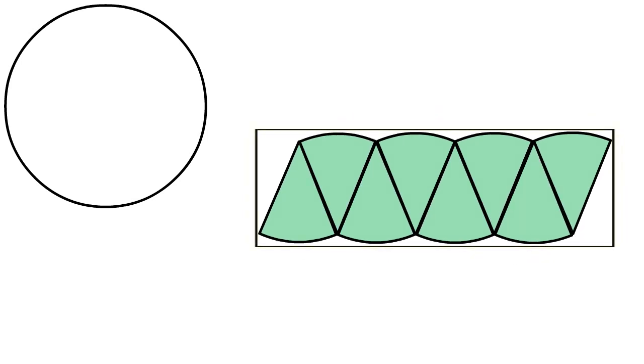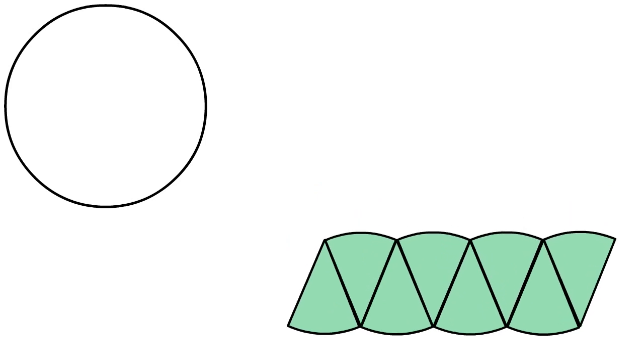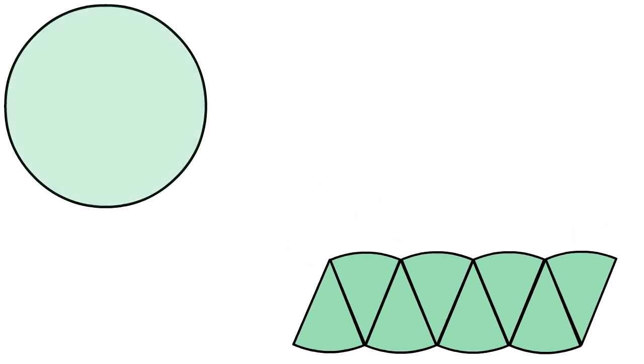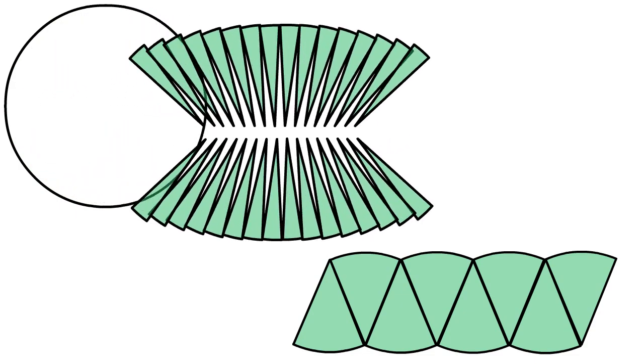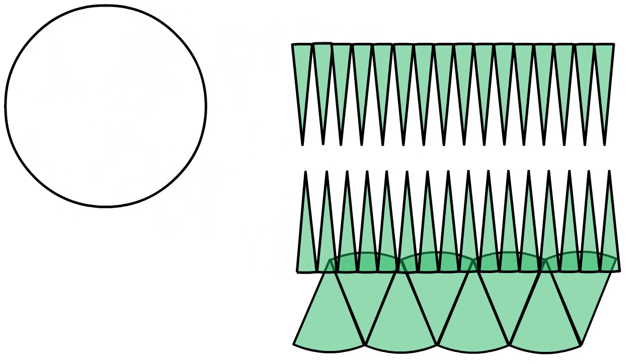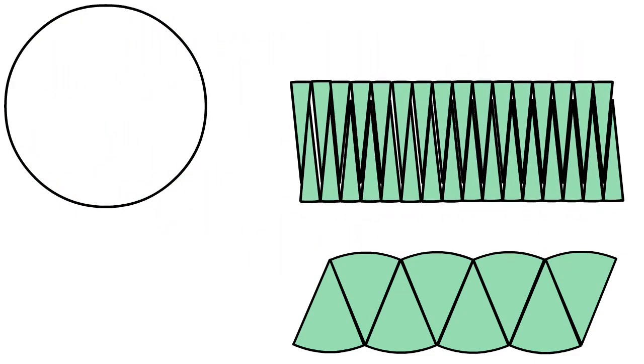As you can see it barely resembles a rectangle. So next we will divide the circle into small equal pieces and we will arrange them in the same manner. You can see that it appears more like a rectangle.